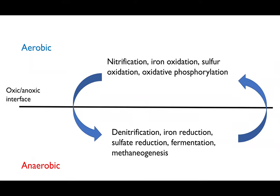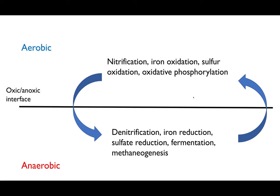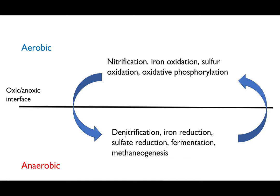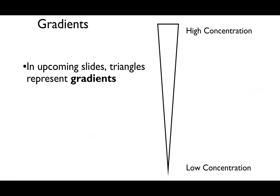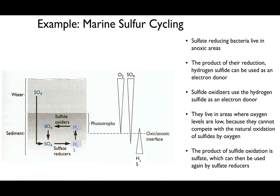These pairings typically occur at the barrier between anoxia and hypoxia, essentially the barrier between aerobic and anaerobic environments. Our aerobic metabolisms — nitrification, iron oxidation, sulfur oxidation, and oxidative phosphorylation — send byproducts down through that interface to anaerobic metabolisms, which include iron reduction, sulfur reduction, fermentation, and methanogenesis. In turn, the anaerobic side sends substrates back up. In the upcoming slides, triangles represent gradients where the base is high concentration and the tip is low concentration.